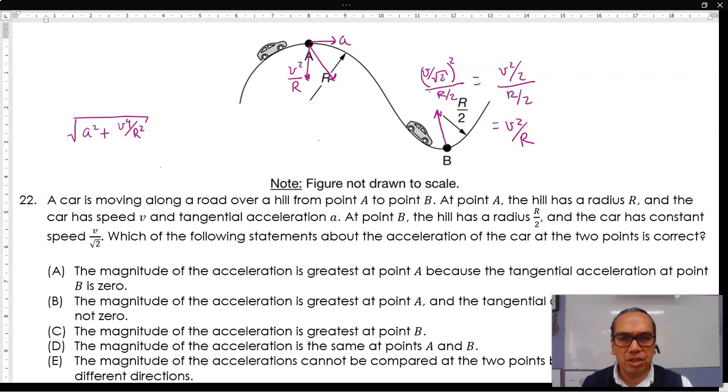Notice that the centripetal or radial acceleration at A is exactly equal to the radial acceleration at B. And so if they have the same component towards the center of the respective circles, the net acceleration for point A has to be bigger because it has a tangential component.